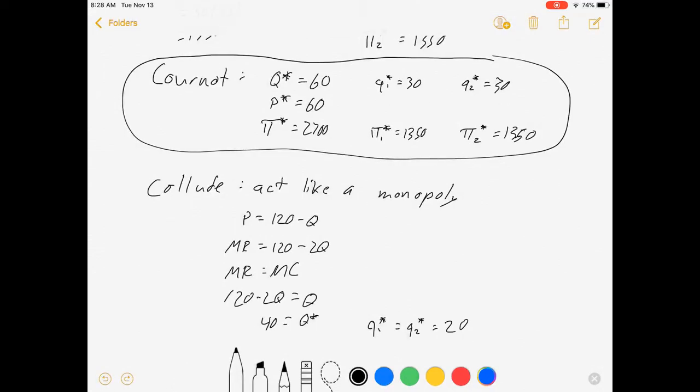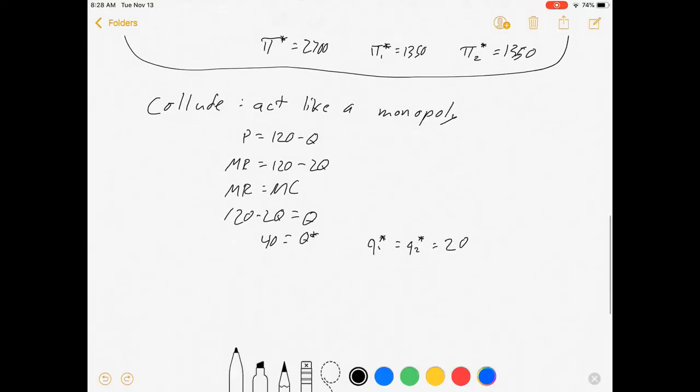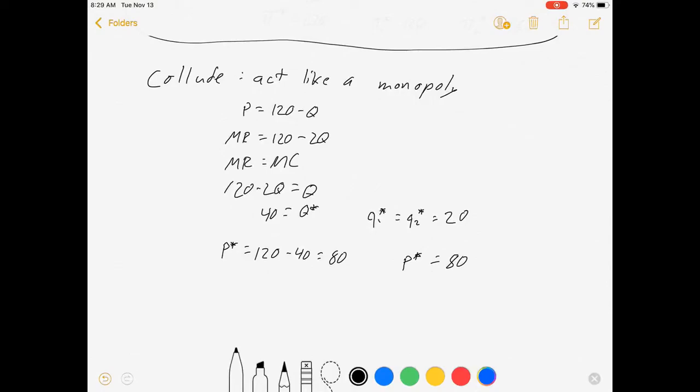If they're going to collude, they're going to produce less stuff, which means that the price is going to be higher. It's going to be 80, so p star equals 80. Now each firm, with their average total cost, ATC1, well that's still just q1 over 2, so 20 over 2 equals 10. ATC2 is also 10.